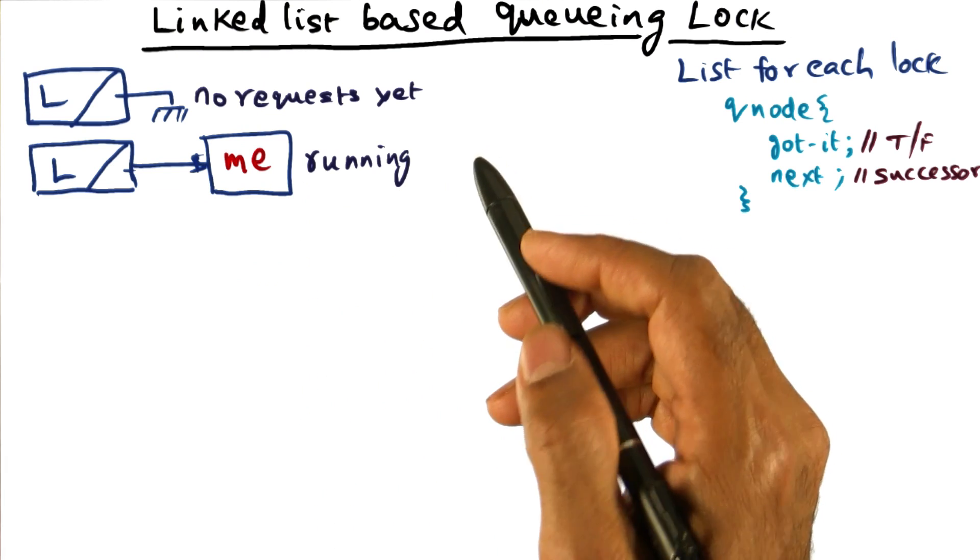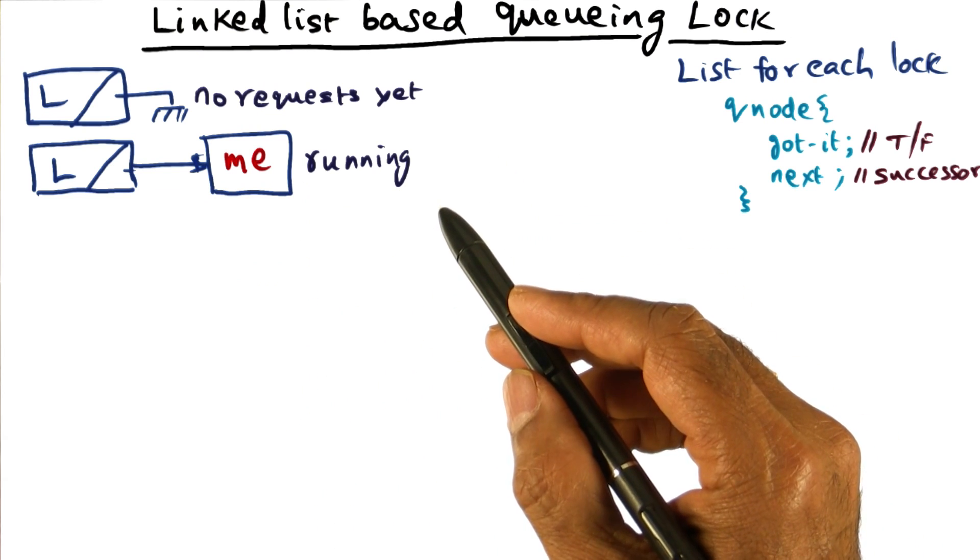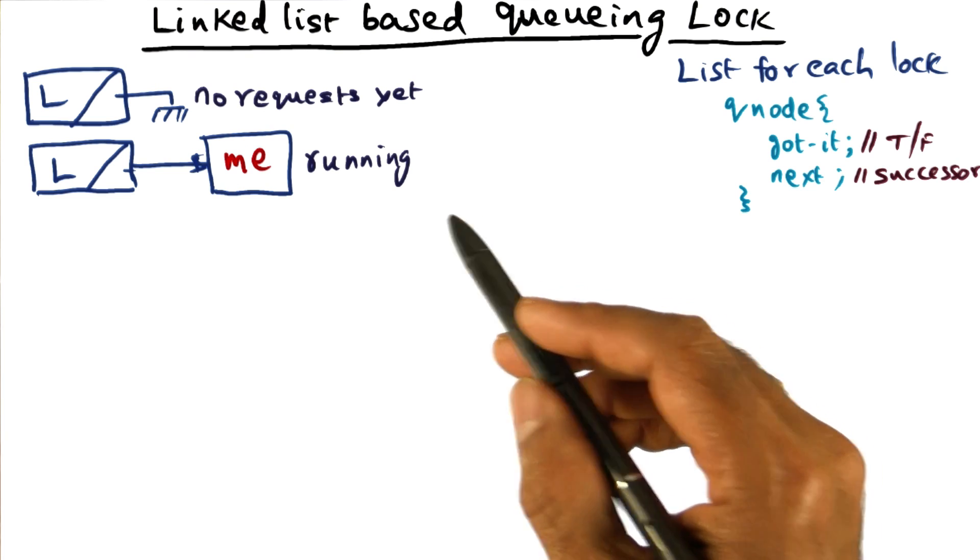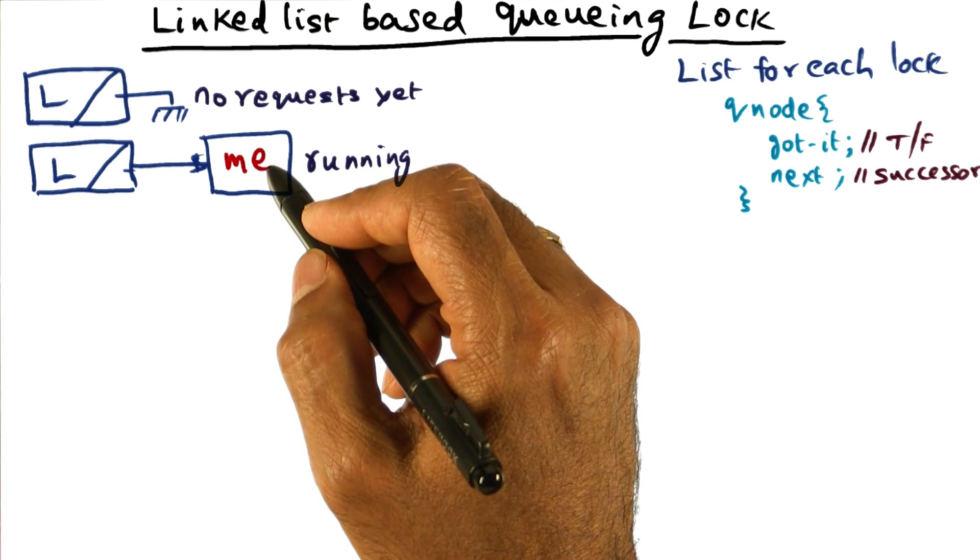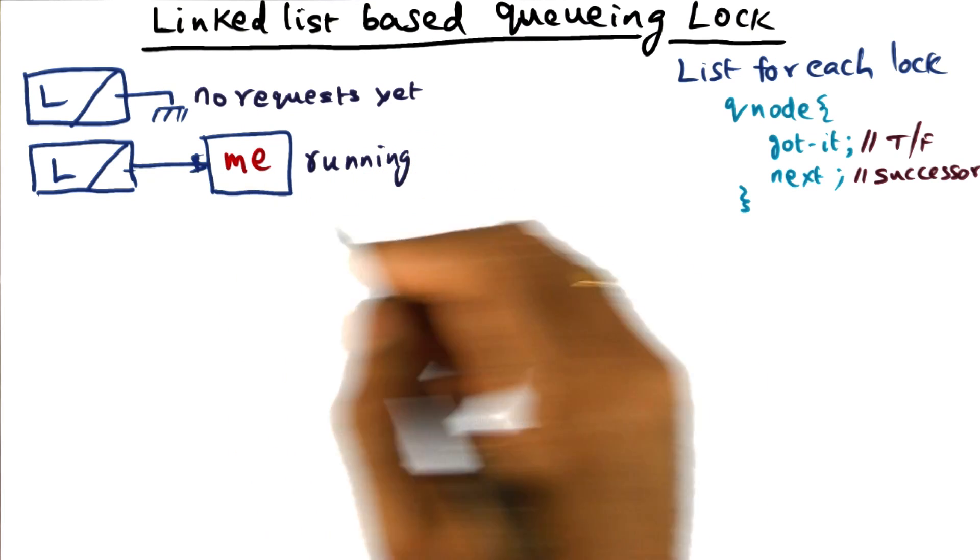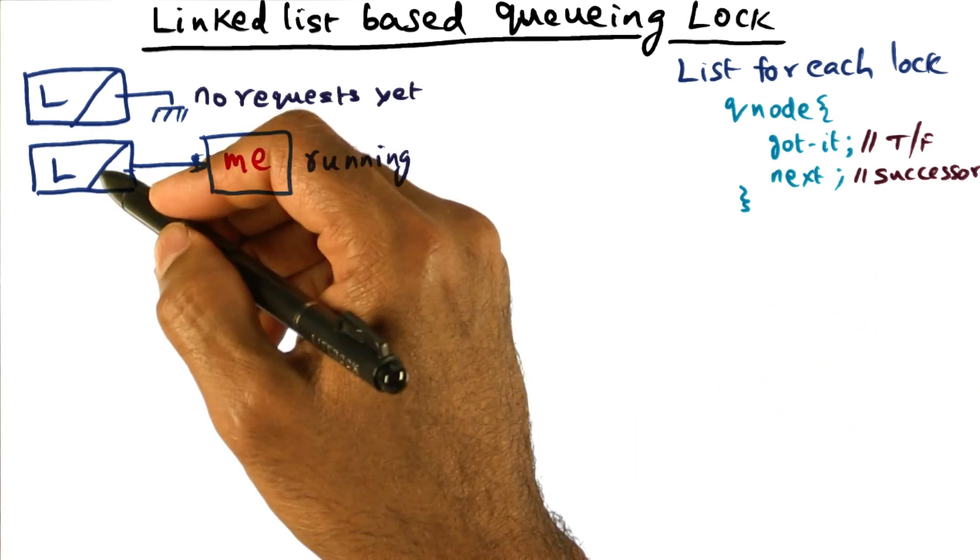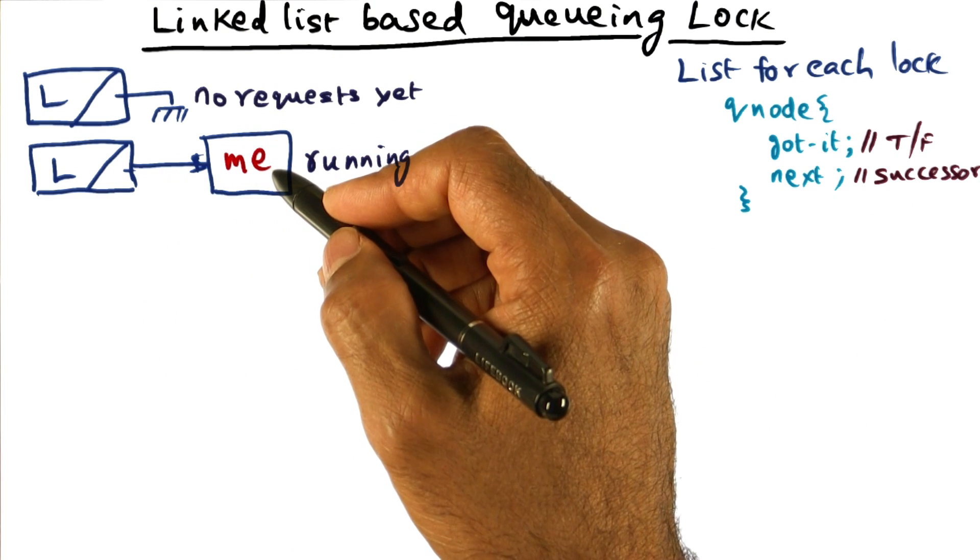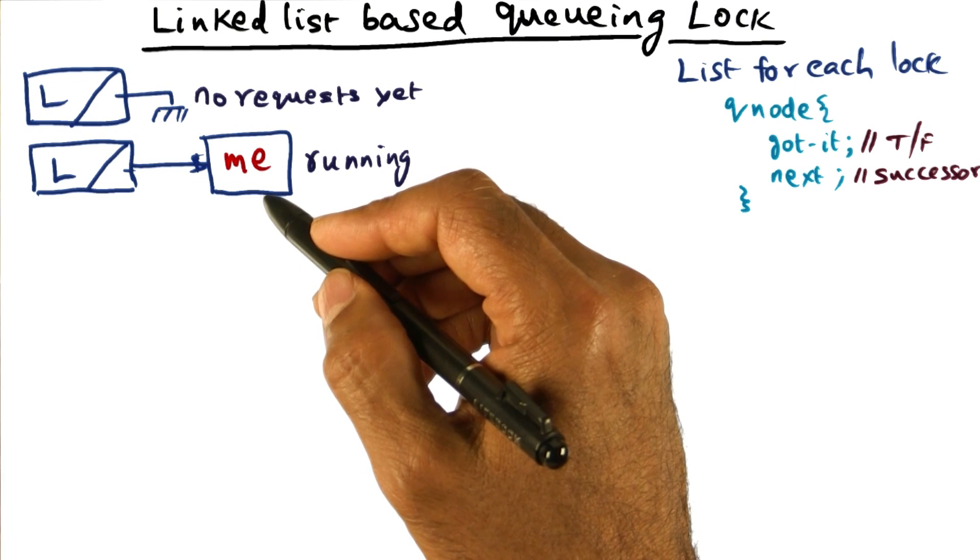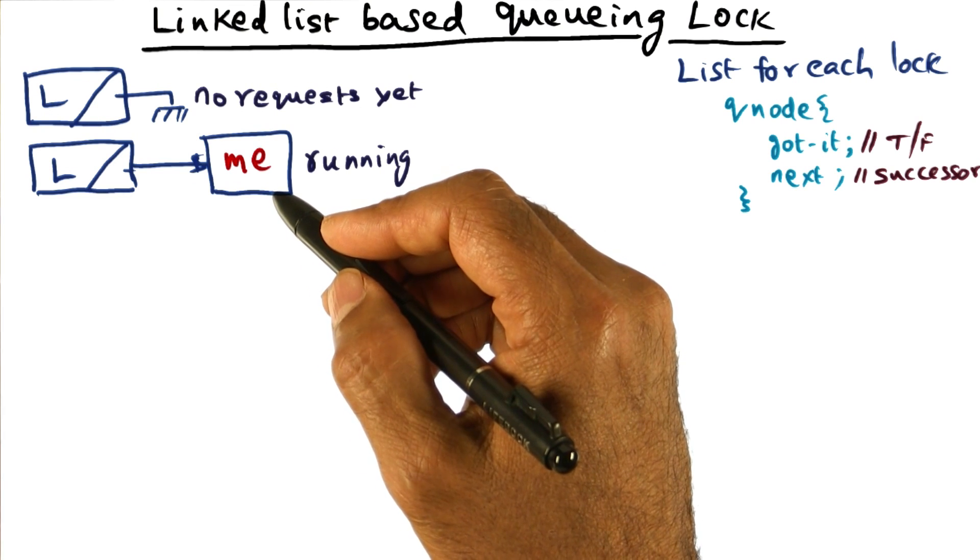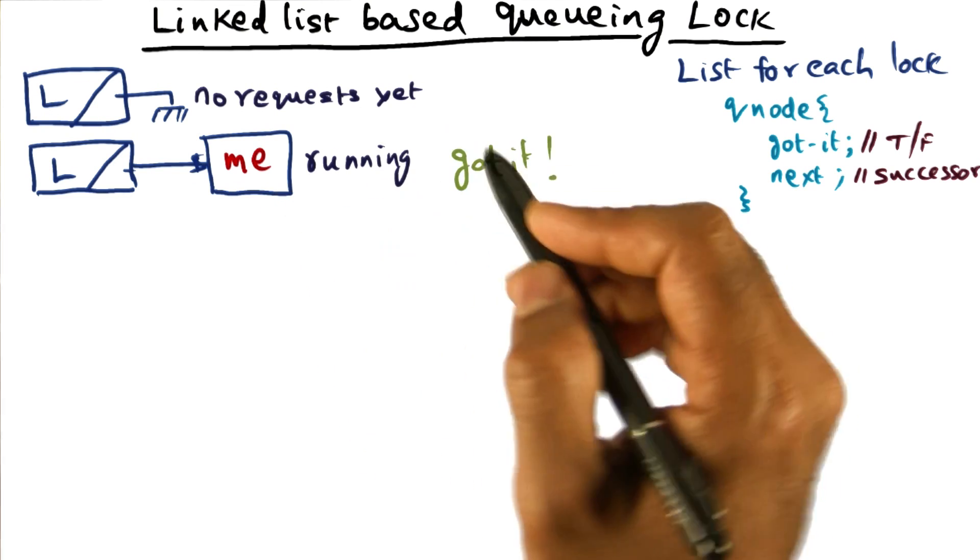I can go off into the critical section and start executing the critical section code associated with this particular lock. What I would have done when I came in to make this lock request is get this queue node and make the lock data structure point to me. I'd also set the next pointer to nil to indicate that there's nobody after me. Once I've done that, I know that I've got the lock.